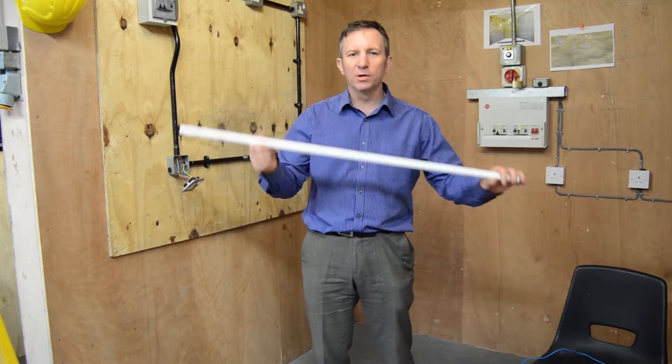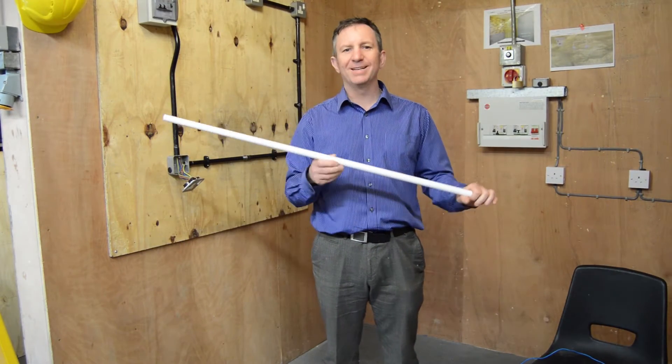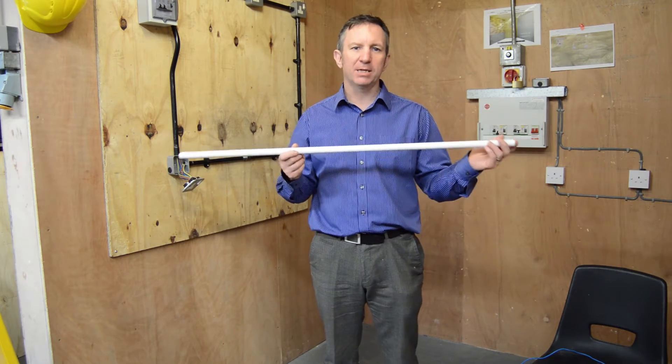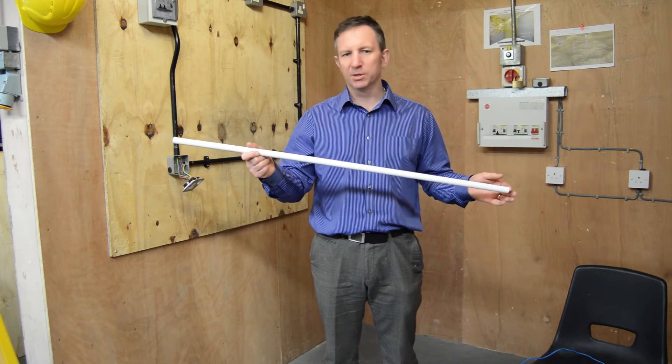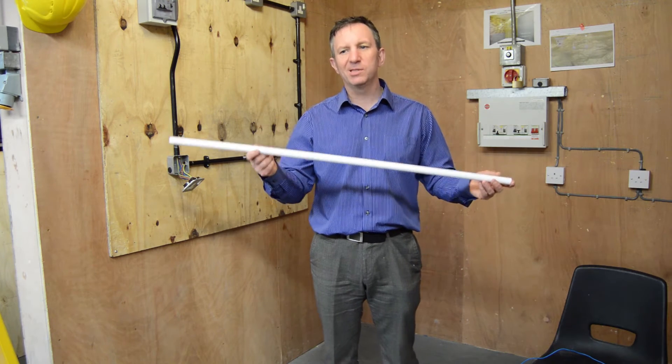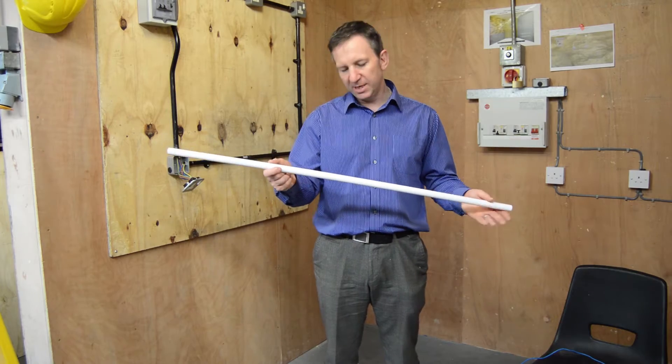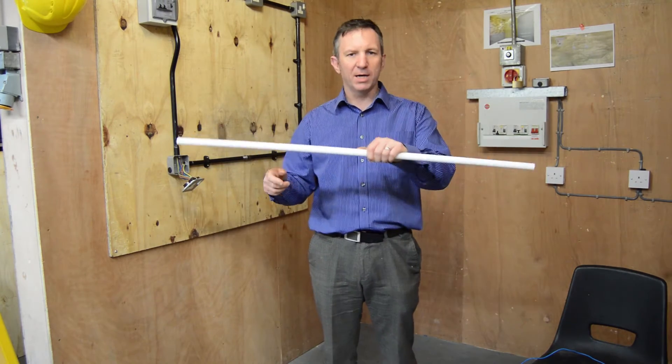What we're going to do now is put a 90-degree bend in this 20 millimeter high impact PVC conduit. The first thing we've got to do is decide whereabouts we're going to put our 90-degree bend and then put a mark. For today's example, we're just going to put the mark approximately halfway.